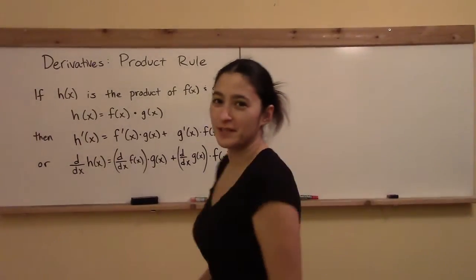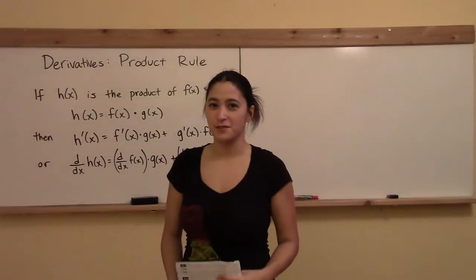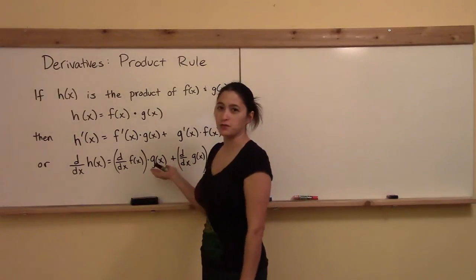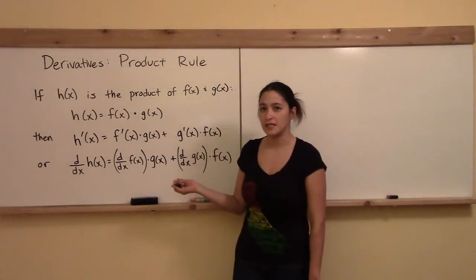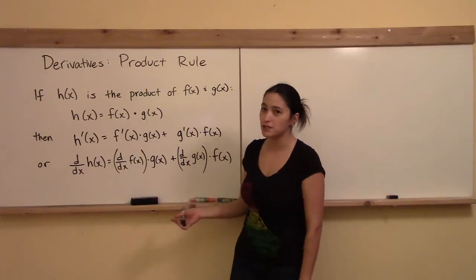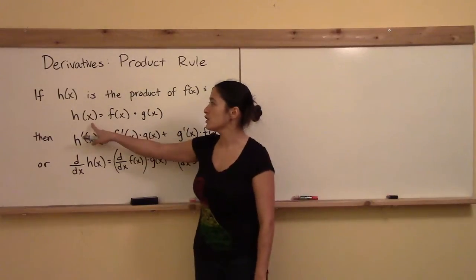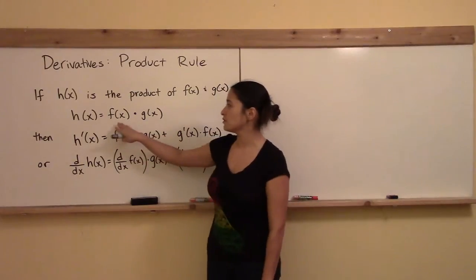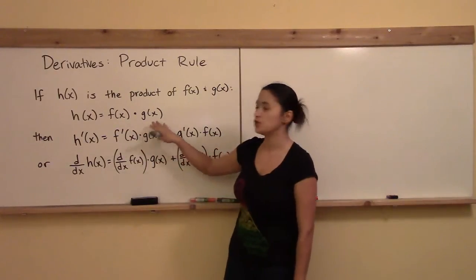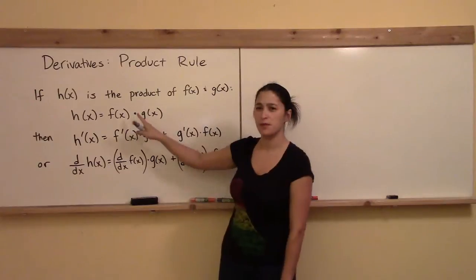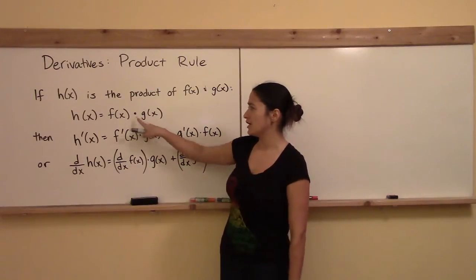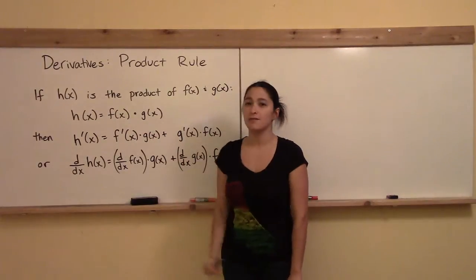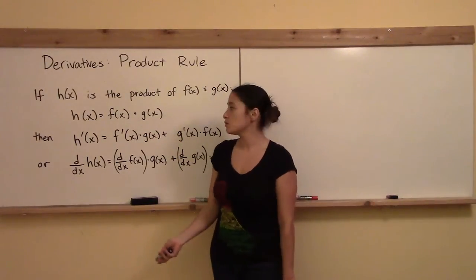The product rule. Moving on in our study of derivatives, the next lesson for us to learn is the rule called the product rule. This rule is going to come in handy every time we form a new function, let's call it h of x, which is the product of two other functions. So h of x is equal to f of x times g of x — this function times that function is h of x, which we wish to derive.